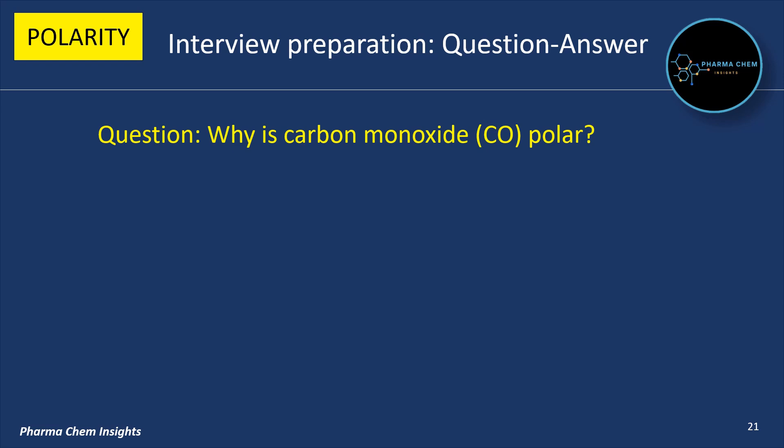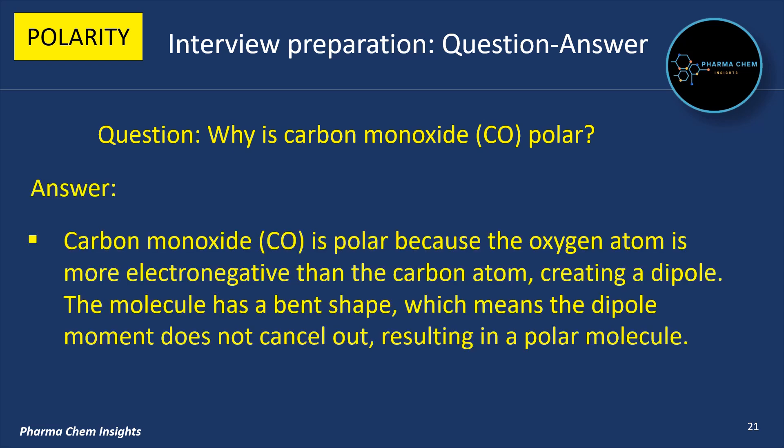Next question: why is carbon monoxide (CO) polar? Answer: carbon monoxide is polar because the oxygen atom is more electronegative than the carbon atom, creating a dipole. The molecule has a bent shape, which means the dipole moment does not cancel out, resulting in a polar molecule.